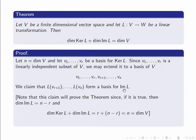Let's see why that proves the theorem. If this is true, then the dimension of the image is the number of elements in this basis, which is N minus R. Then the dimension of the kernel plus the dimension of the image is R plus N minus R, which is of course N — and that's the dimension of V. So all we have to prove is that this set of elements forms a basis for the image.